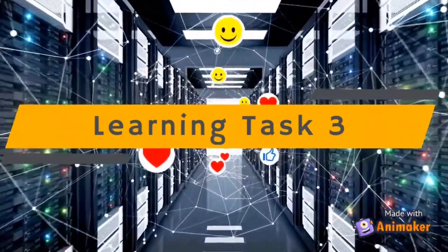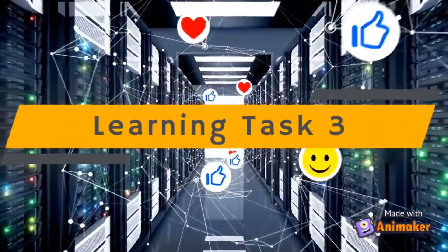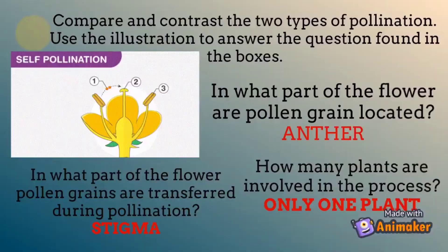Let's do Learning Task Number 3: compare and contrast the two types of pollination. Use the illustration to answer the questions found in the boxes. In what part of the flower are pollen grains located?